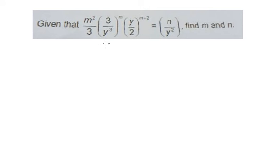We need to simplify everything in here. We have m squared, 3 to the power of n minus 1, because this is 1 over 3, y to the power of 3.